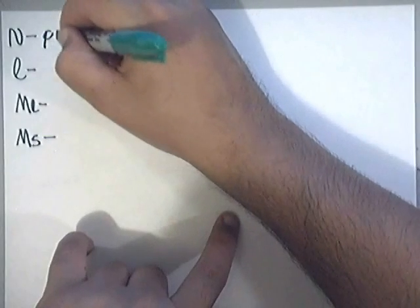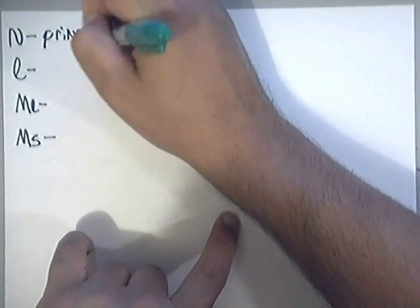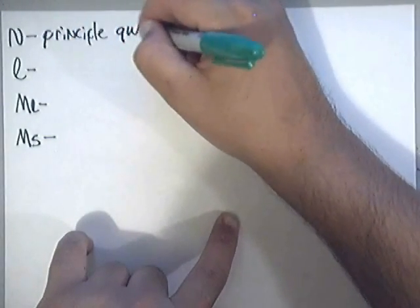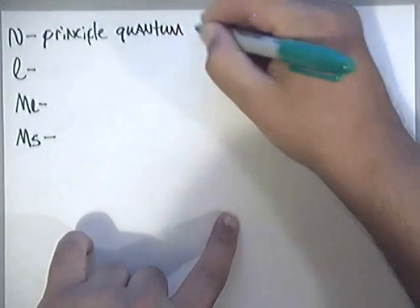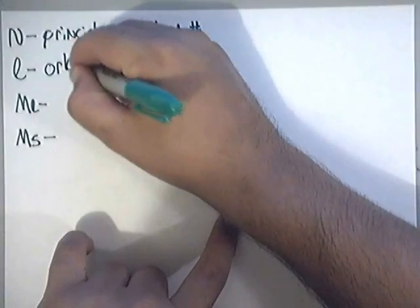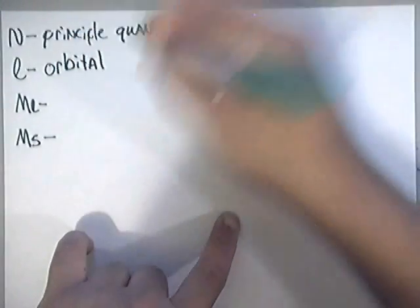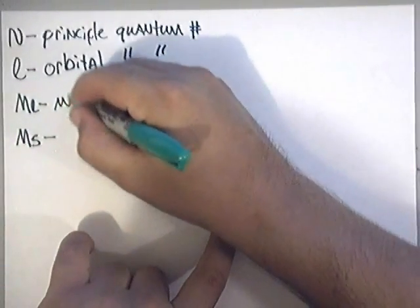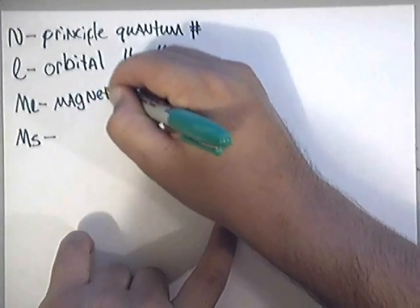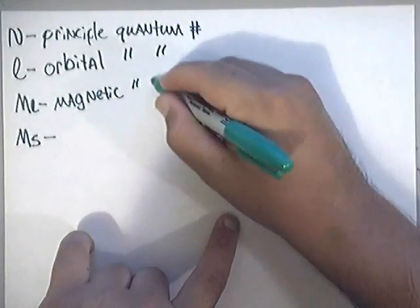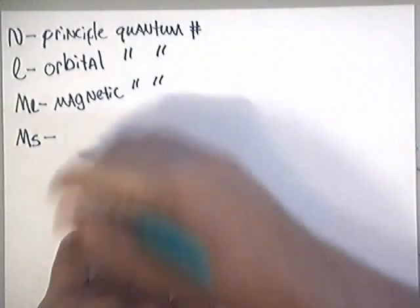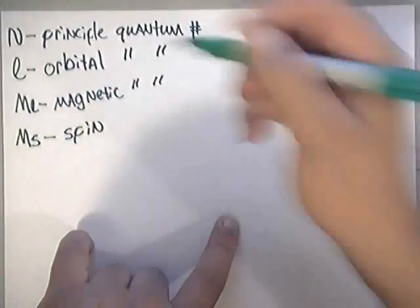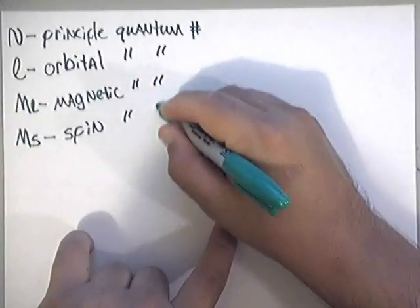N is the principal quantum number. L is the orbital quantum number. ML is the magnetic quantum number. And MS is the spin quantum number.